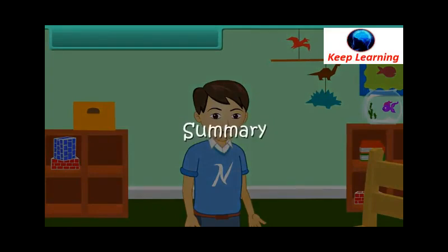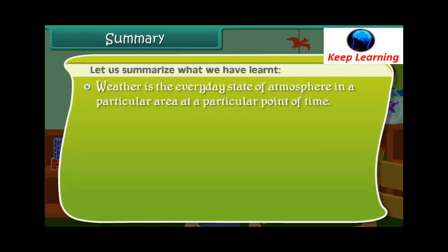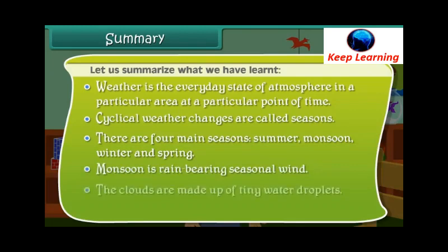Let us summarize what we have learned. Weather is the everyday state of atmosphere in a particular area at a particular point of time. Cyclical weather changes are called seasons. There are four main seasons: summer, monsoon, winter and spring. Monsoon is a rain-bearing seasonal wind. The clouds are made up of tiny water droplets.